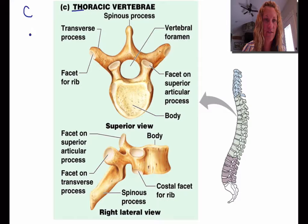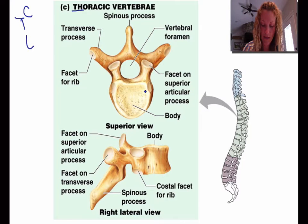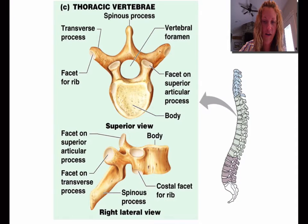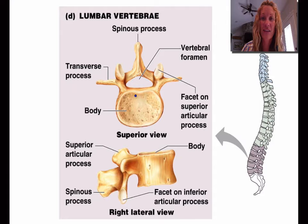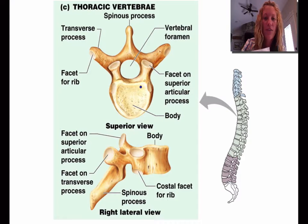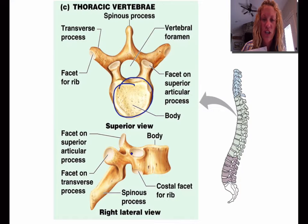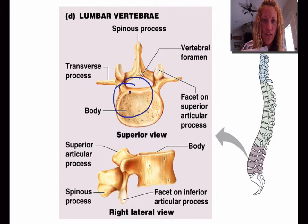Now we're into the thoracic vertebrae. You have cervical first, then thoracic, then lumbar. Here are some pictures of these — you can take notes on your study guide if you don't want to draw all of these out. The major difference between how they appear is that the thoracic are going to be a lot smaller. The thoracic will be smaller compared to the lumbar, but larger than the cervical. The thoracic body is kind of more circular shaped, and the lumbar is wider, just a little bit different shape.